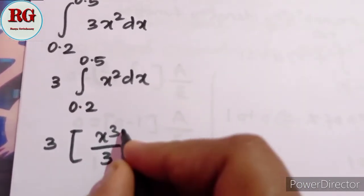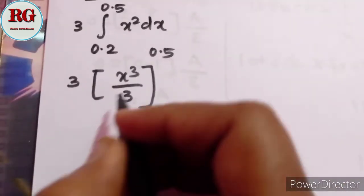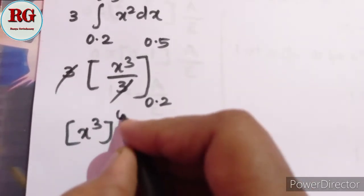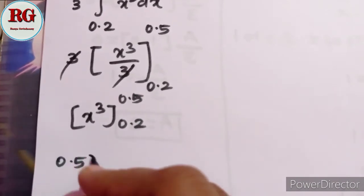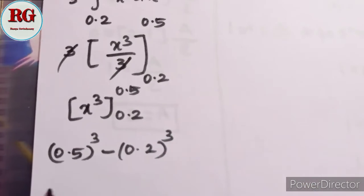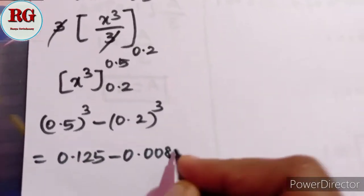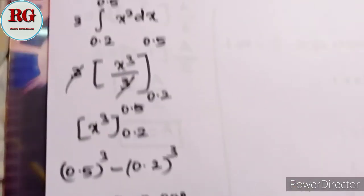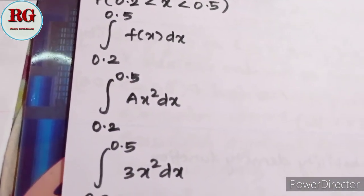This 3 times the integral from 0.2 to 0.5 of x² dx gives us x³ over 3, evaluated from 0.5 to 0.2. So this equals 0.5 cubed minus 0.2 cubed, which is 0.125 minus 0.008.